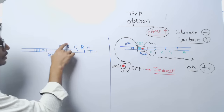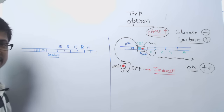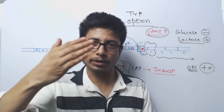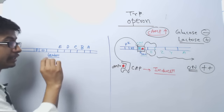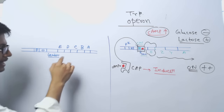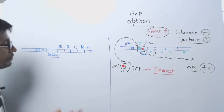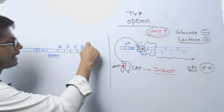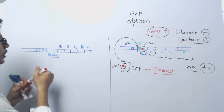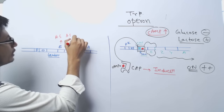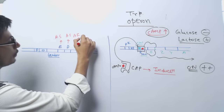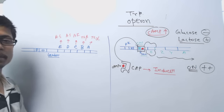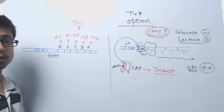For example, the first two genes E and D produce anthranilate synthase. If you look at the tryptophan biosynthesis pathway in prokaryotes, different enzymes are required at different stages. Gene C produces anthranilate isomerase; gene B produces tryptophan synthase beta; and gene A produces tryptophan synthase alpha. Together these proteins make tryptophan biosynthesis possible.